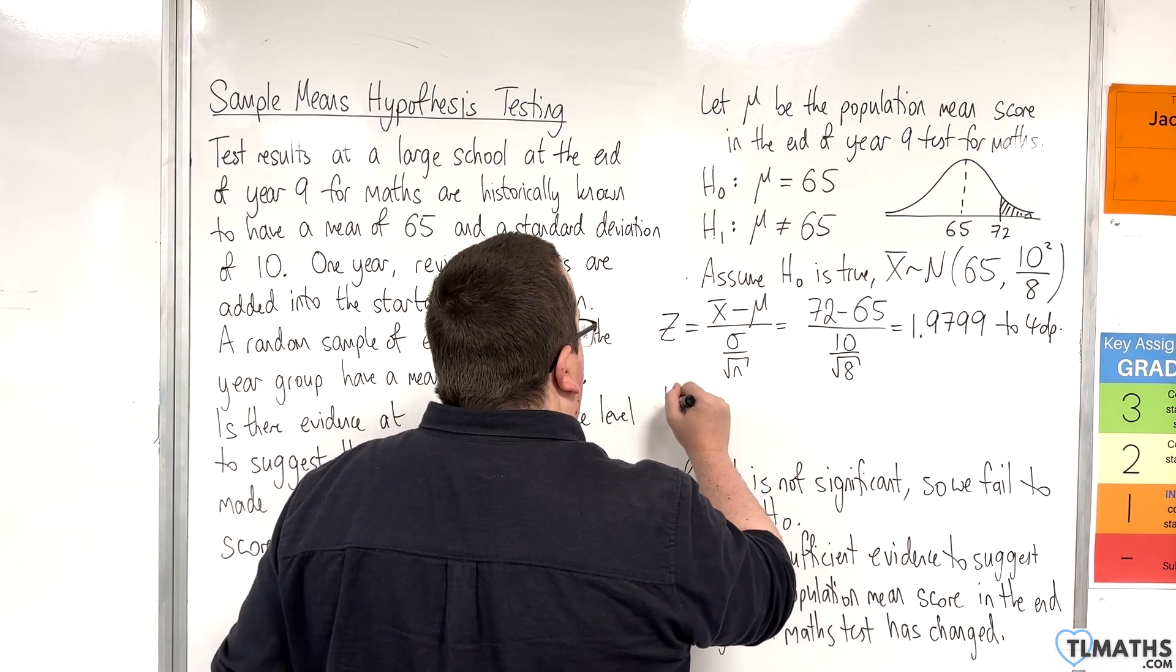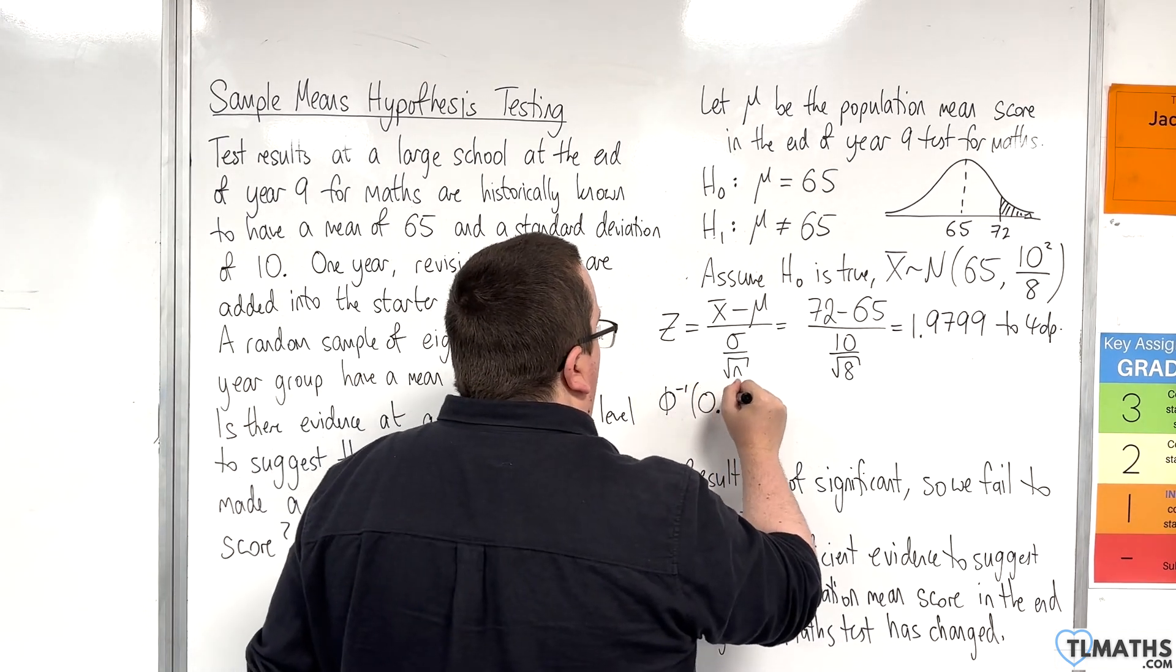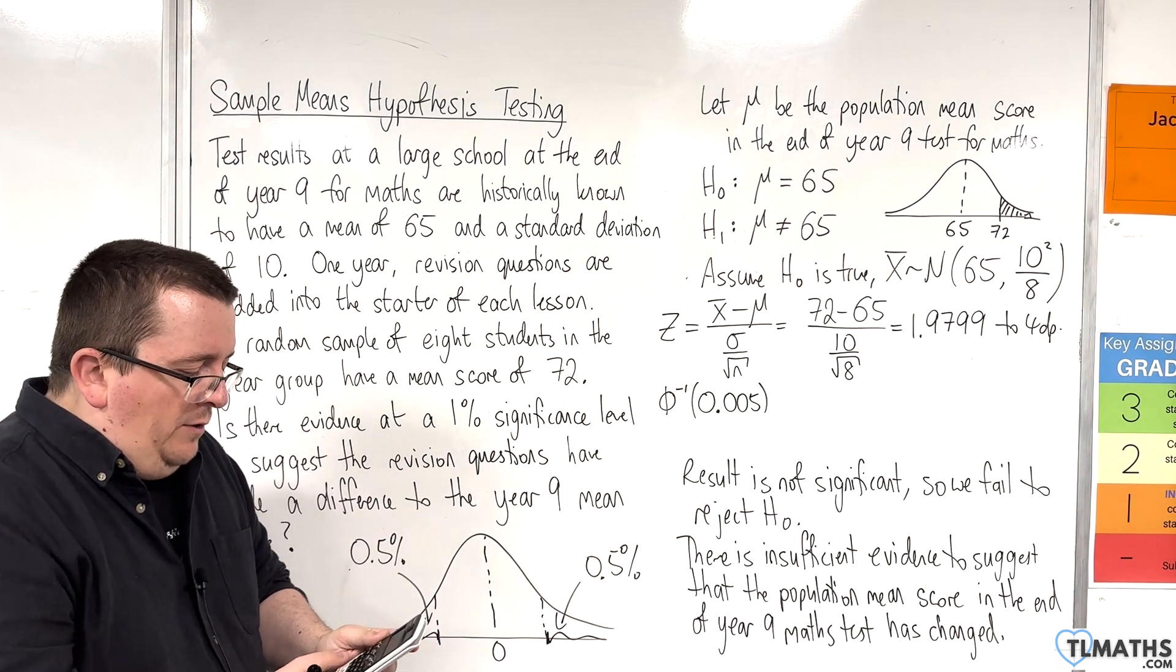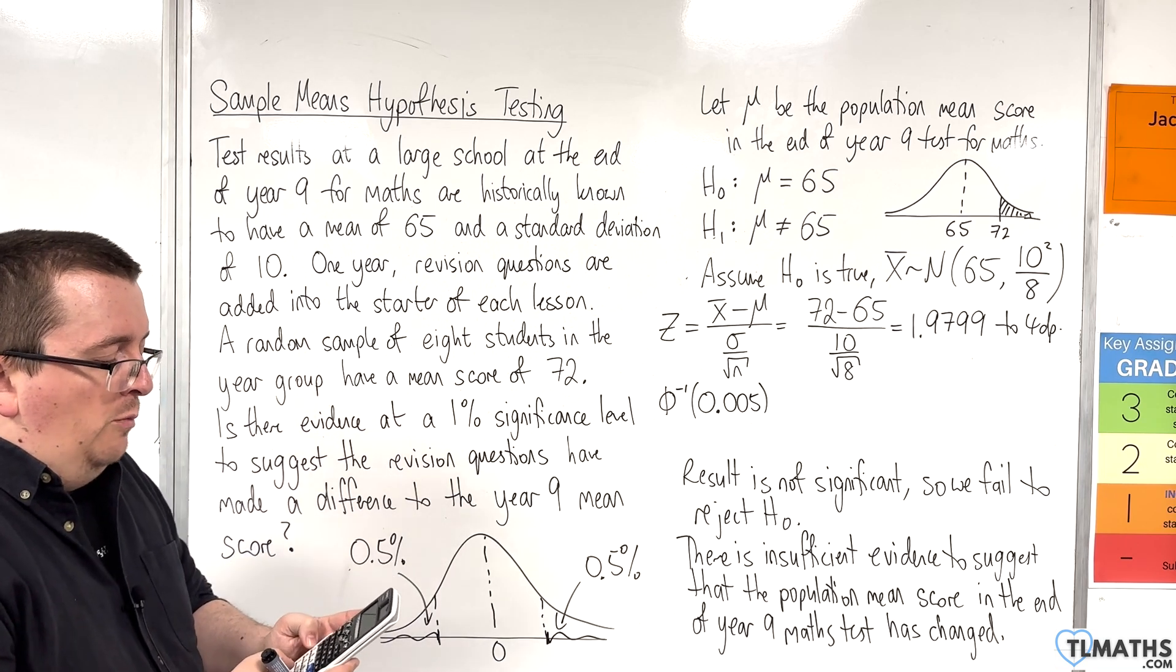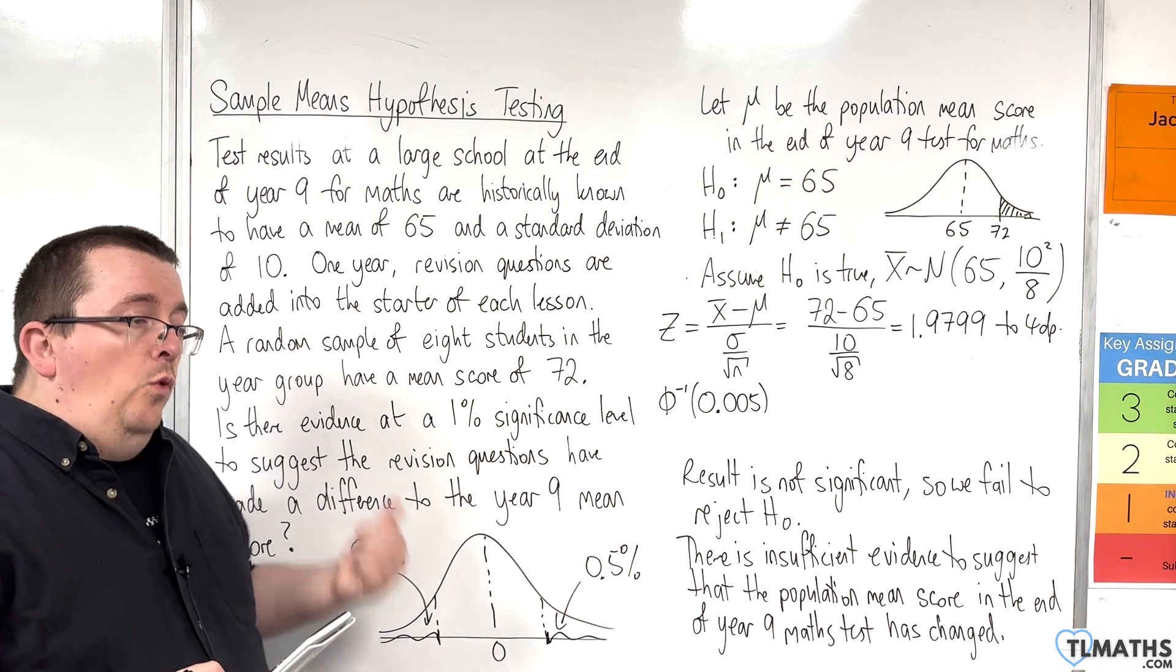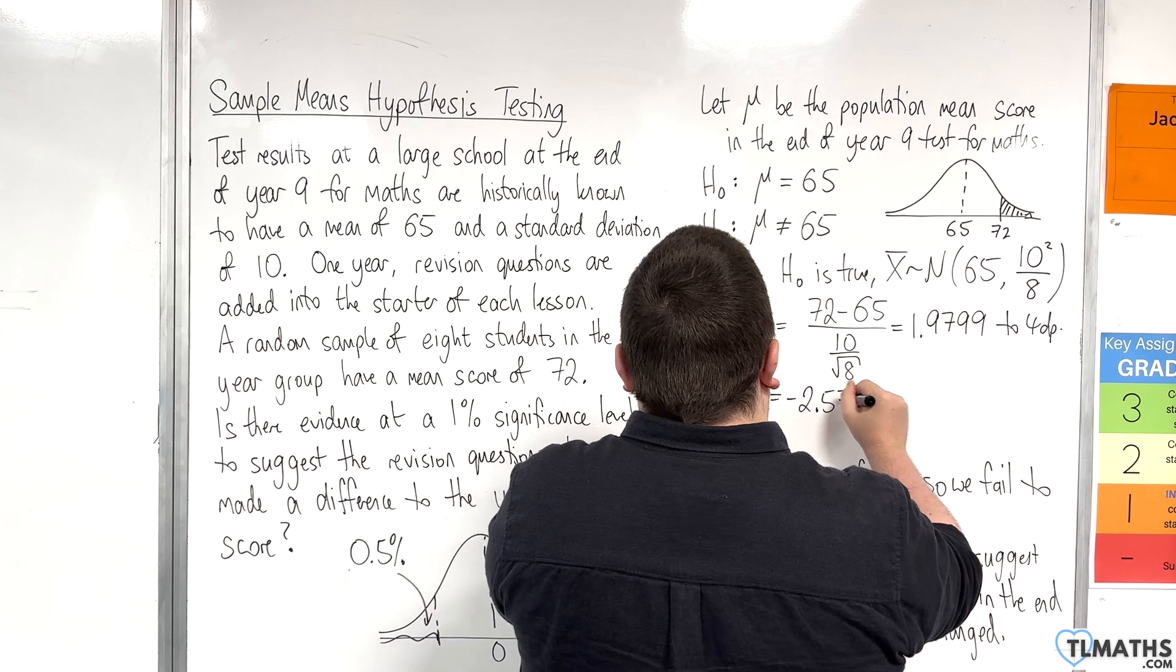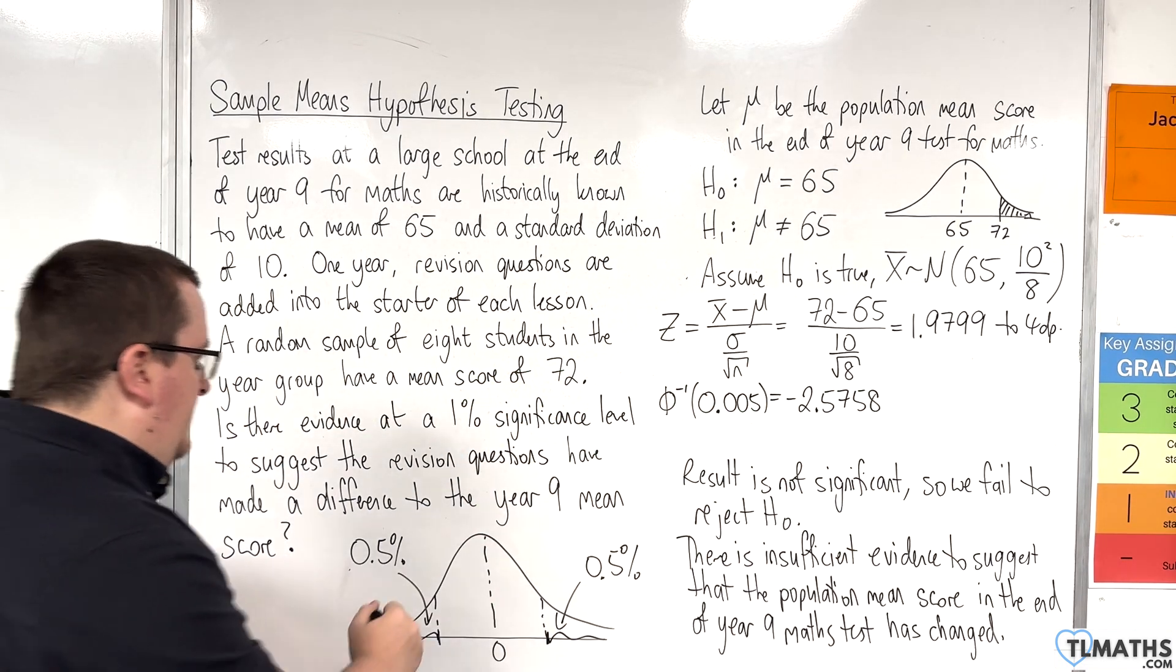I'm going to look at the inverse normal of, for our first one, 0.005, half the significance level of the bottom tail. When I go into my calculator, I'm going to go into distributions. Inverse normal. The area is 0.005. Sigma is 1. The mean is 0, the standard normal. We are looking at minus 2.5758. That's that value there.